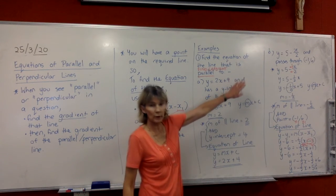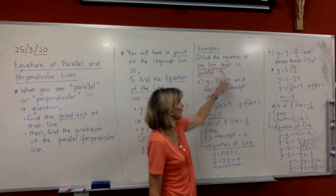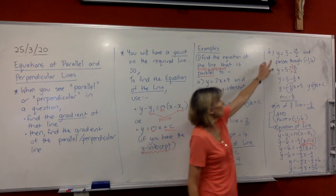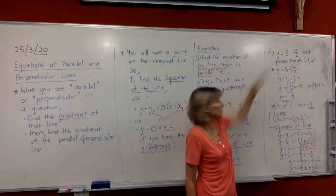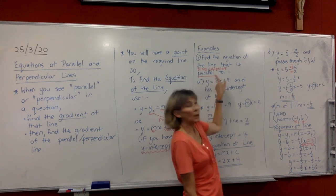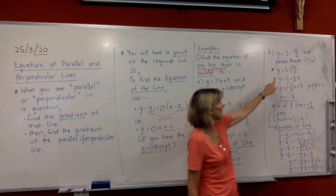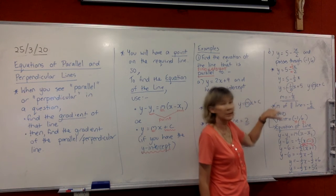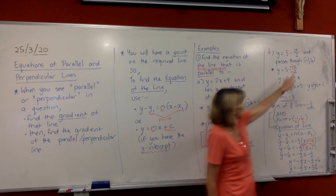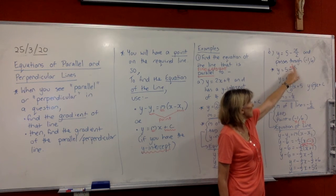All right, in the other question over here, find the equation of the line that is parallel to y equals 5 minus x over 2, and passes through minus 1, 6. So again, it's parallel, so we're going to find the gradient. So we're going to rearrange this line they gave us to find its gradient.